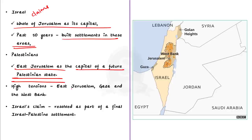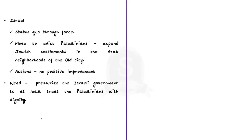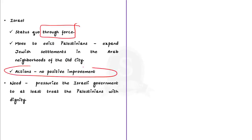Tensions are consistently high between Israel and Palestinians in East Jerusalem, Gaza and the West Bank. Most countries have not recognized Israel's claims over the city and believe its status should be resolved as part of a final Israel-Palestinian settlement. The ongoing violence results from tensions building since the start of Ramadan in mid-April 2021, and Israel's threatened eviction of Palestinian families in East Jerusalem has caused rising anger. This proves the need for the international community to pressurize the Israeli government to at least treat Palestinians with dignity.